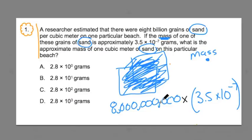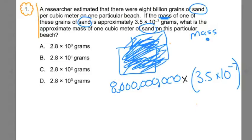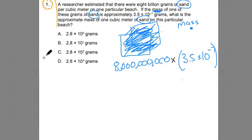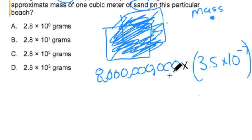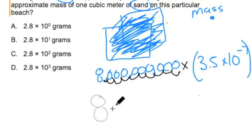This means we're going to take the 8 billion and multiply it by the mass of each one of those grains of sand. There are lots of ways to do this; I'm going to do a traditional way. Since the answer choices are in scientific notation form, I'm going to convert the 8 billion into scientific notation. I put my decimal right before the first zero and count up the spaces before the 8 digit: 1, 2, 3, 4, 5, 6, 7, 8, 9 spaces. So I can rewrite 8 billion as 8 times 10 to the 9th power.